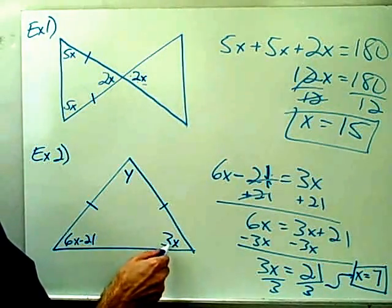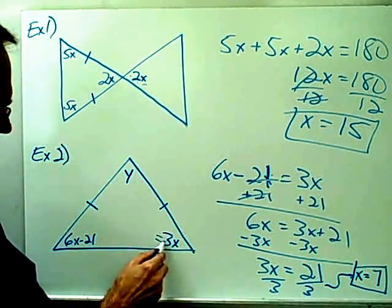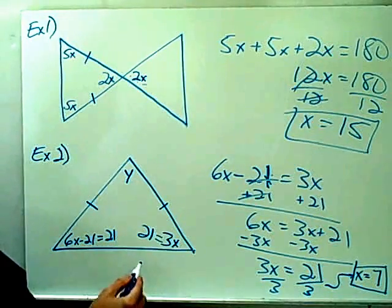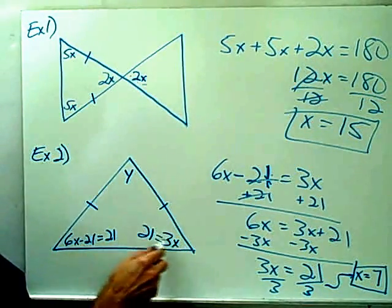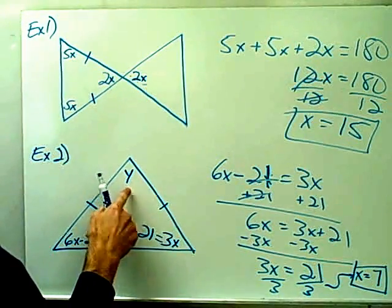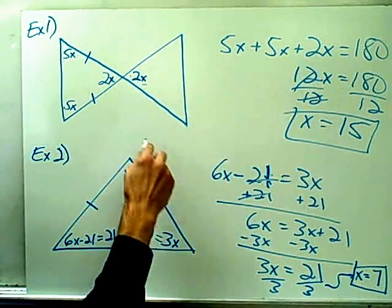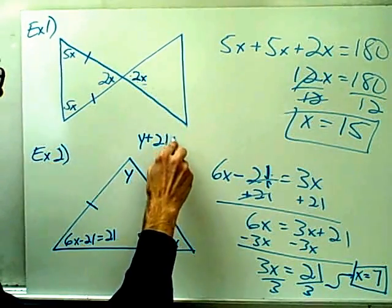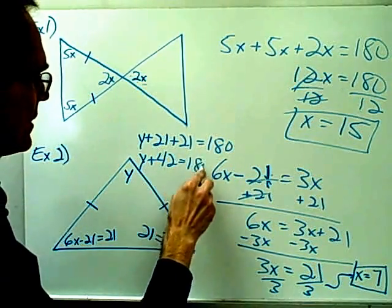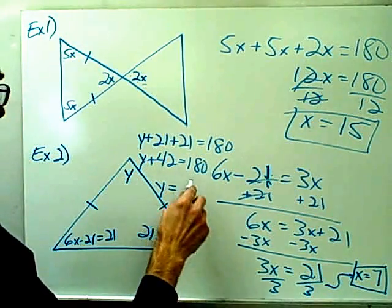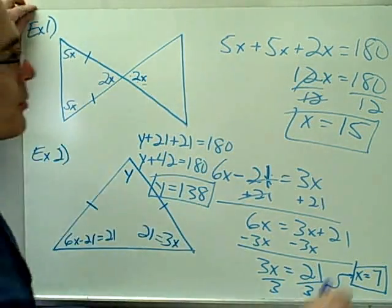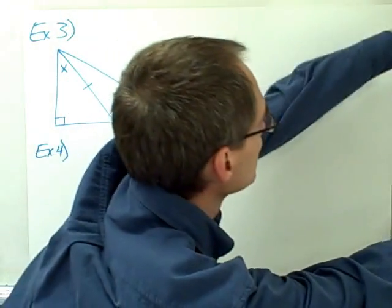Now that I know x equals 7, I can plug it back in. This angle is 3 times 7, which is 21 degrees, and the other base angle is also 21 degrees. Using the triangle sum theorem: y plus 21 plus 21 equals 180, so y plus 42 equals 180. Subtracting 42 from both sides gives y equals 138.